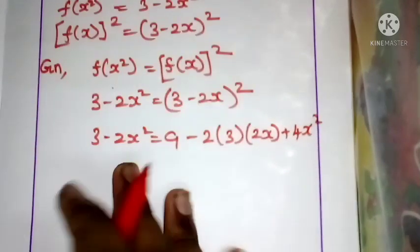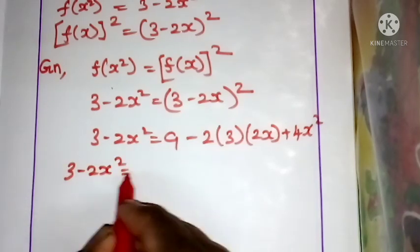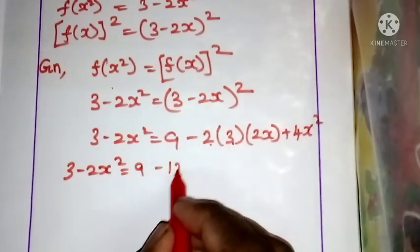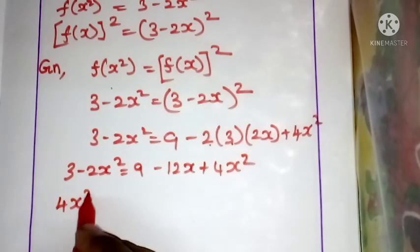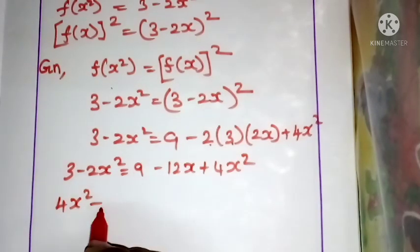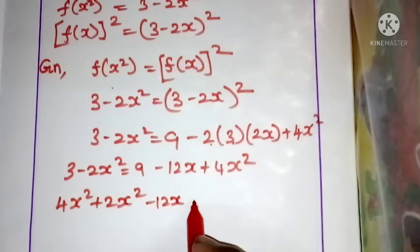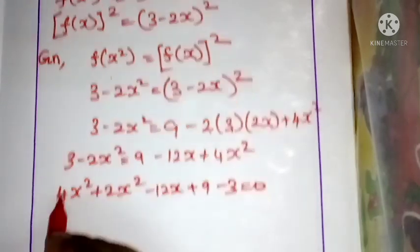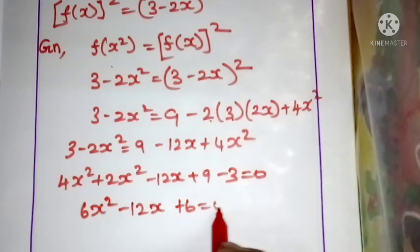So (3 minus 2x)² equals 9 minus 12x plus 4x². Now expanding and rearranging, we get 6x² minus 12x plus 6 is equal to 0.